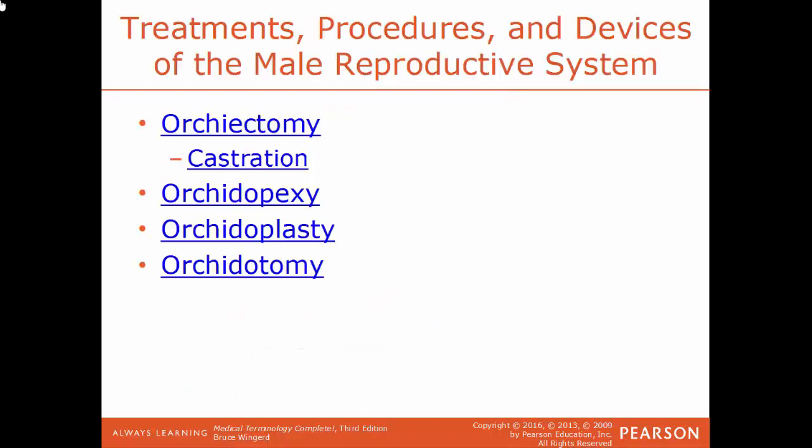Orchiectomy is the surgical removal of one or both of the testes — another term for this procedure would be castration. Orchidopexy is a procedure done to remove an undescended testis and then fixate it into place. Orchidoplasty is the surgical repair of a testis. To do so, you need to cut into a testis — that procedure would be an orchidotomy.